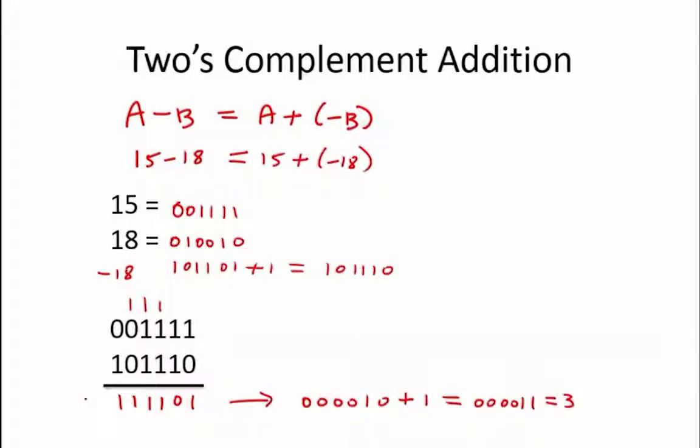This equals 3, which means that 111101 is equal to negative 3, which is the result we expected to get when performing 15 minus 18.